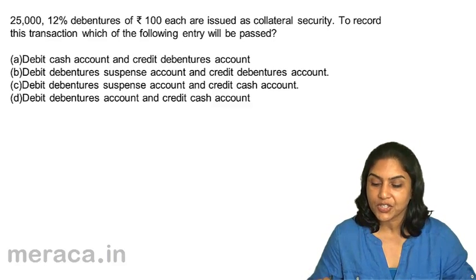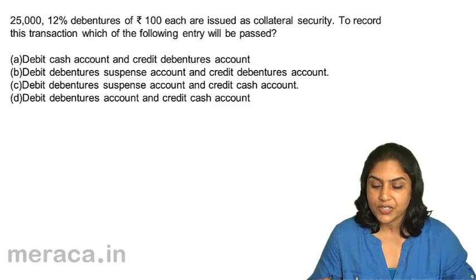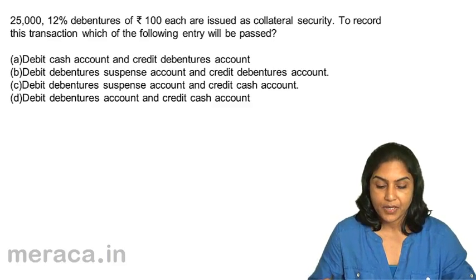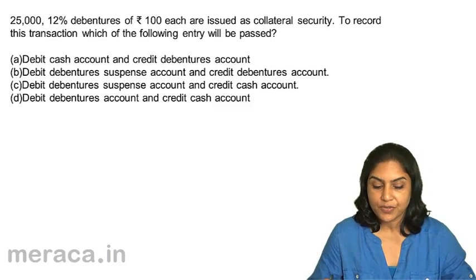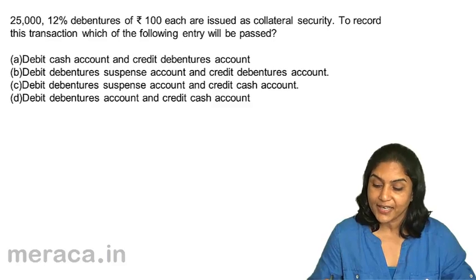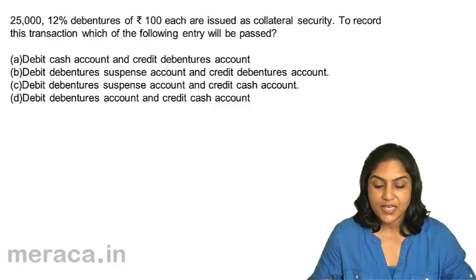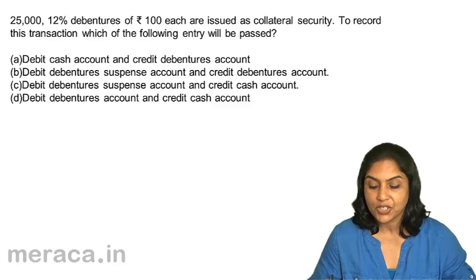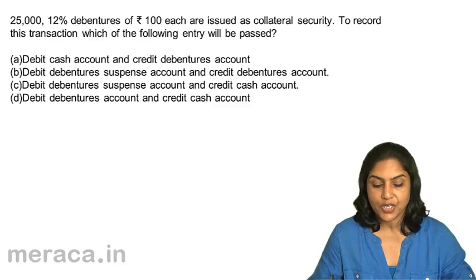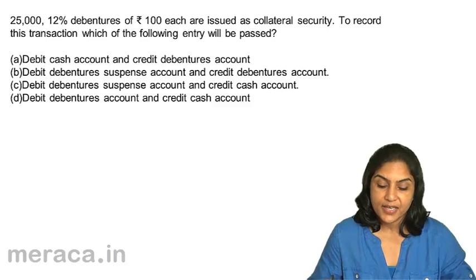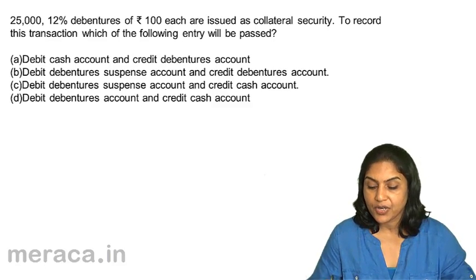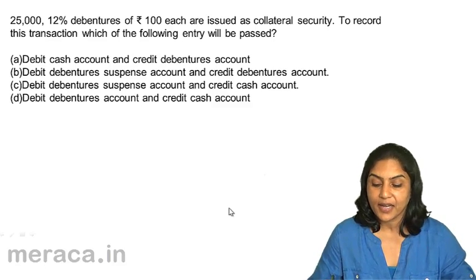25,000 12% debentures of 100 each are issued as collateral security. To record this transaction, which of the following entries will be passed? A: debit cash, credit debentures. B: debit debenture suspense, credit debentures. C: debit debenture suspense and credit cash account. And D: debit debenture account and credit cash account.